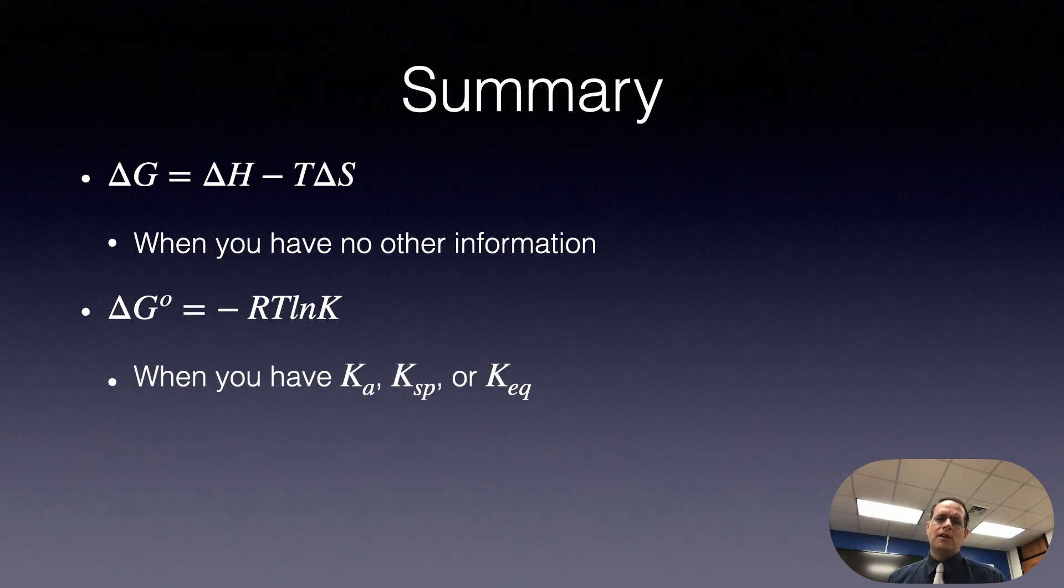Now, let me summarize the two equations we know for this class so far. ΔG° is equal to ΔH minus TΔS. Use this formula when you have no other information except some strange reaction you've never seen before. And you just got to go in and calculate ΔH and ΔS and then finally ΔG. Now, the next formula, ΔG° is equal to minus RT ln K. Use that formula if you recognize the equilibrium as an acid or a base or a formation constant or a solubility product, or the word problem blatantly gives you the equilibrium constant.